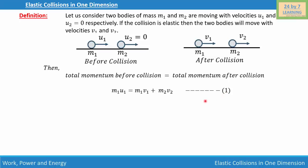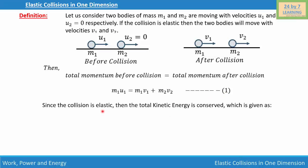Since the collision is elastic, there is no change in kinetic energy and kinetic energy is conserved. So we write: ½·m1·u1² = ½·m1·v1² + ½·m2·v2². This is our second equation, where the left side is the initial kinetic energy and the right side is the final kinetic energy after collision.